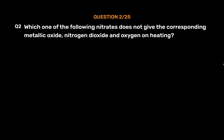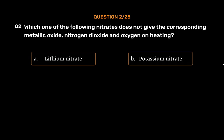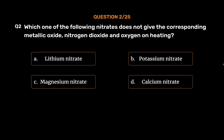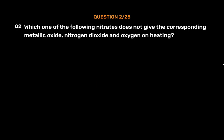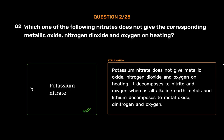Question number 2. Which one of the following nitrates does not give the corresponding metallic oxide, nitrogen dioxide and oxygen on heating? Option A, lithium nitrate; Option B, potassium nitrate; Option C, magnesium nitrate; Option D, calcium nitrate. The correct answer is Option B, potassium nitrate. Potassium nitrate does not give metallic oxide, nitrogen dioxide and oxygen on heating. It decomposes to nitrite and oxygen, whereas all alkaline earth metals and lithium decompose to metal oxide, dinitrogen and oxygen.